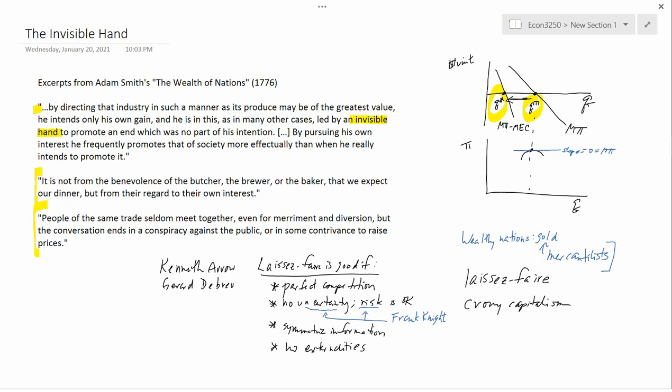Now, this doesn't automatically mean if one of these assumptions fails that government regulation is better, because government is run by people, not gods, and so government can make mistakes also. So you can't directly conclude from here that just because laissez-faire isn't optimal, that we should have government regulate the economy. But the only way you can prove that laissez-faire is good is if all four of these conditions occur. And I think a pretty convincing case can be made that in the modern world, it'd be hard to find even one sort of transaction where all these things occur.